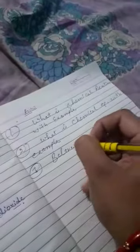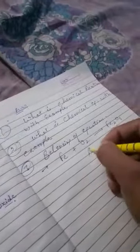So you have to do in homework. First, write down what is chemical reaction with example. Second, what is chemical equation with example. And third, balancing of equation. Fe plus O2, Fe2O3, balance it.